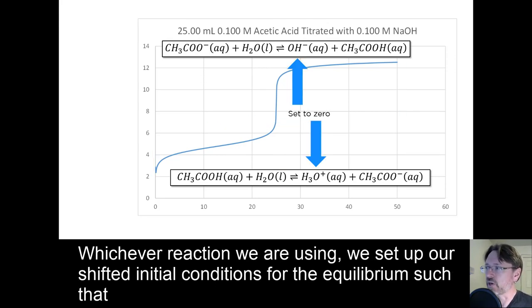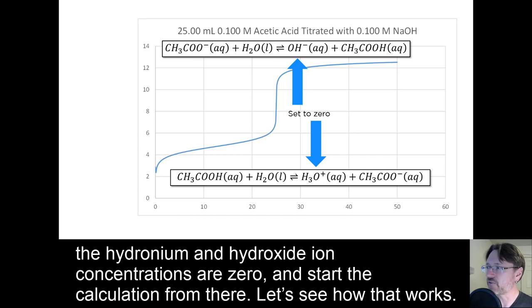Whichever reaction we are using, we set up our shifted initial conditions for the equilibrium such that the hydronium and the hydroxide ion concentrations are zero, and start the calculation from there. Let's see how this works.